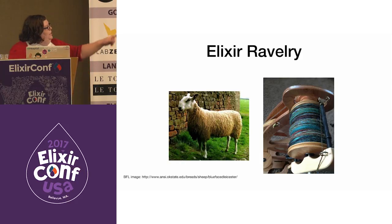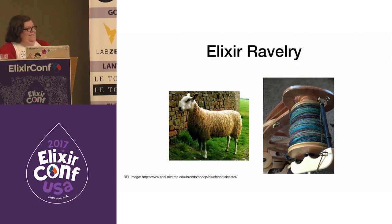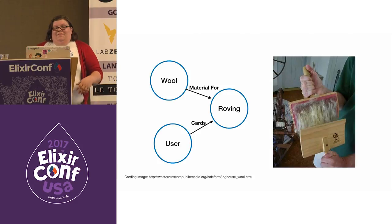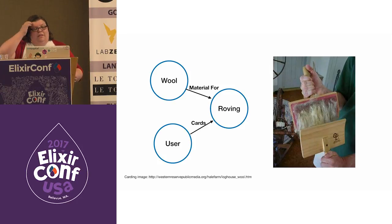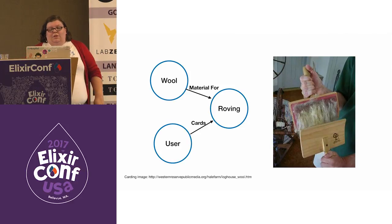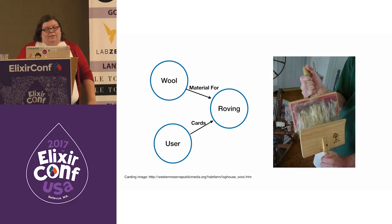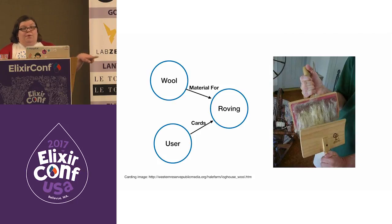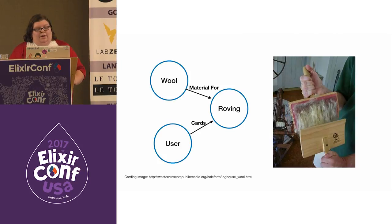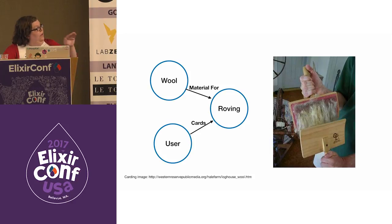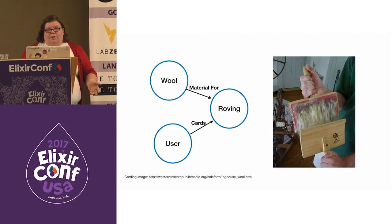We'll be getting from raw sheep wool to handspun yarn. First, we start with some wool and we card it. Carding is the process of detangling, cleaning, and intermixing fibers into a long sliver. The wool is described as a node, and it has a relationship of being material for the roving. It's done by a person — either with carding paddles or by a machine — and you can have more than one user doing the carding.